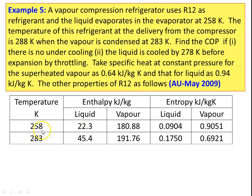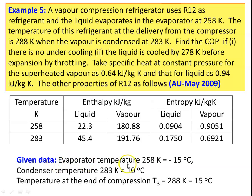Properties are given for temperatures 258 K and 283 K: enthalpy of liquid HF, enthalpy of vapor HG, entropy of liquid SF, and entropy of vapor SG. Given data: evaporator temperature is 258 Kelvin (minus 15 degrees Celsius), condenser temperature is 283 Kelvin (10 degrees Celsius), and temperature at the end of compression T3 equals 288 Kelvin (15 degrees Celsius).